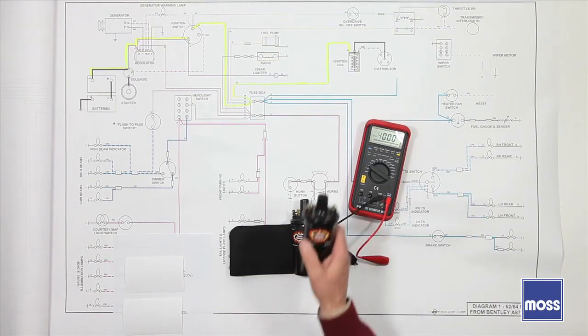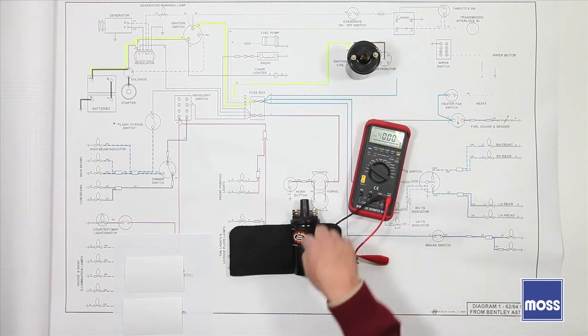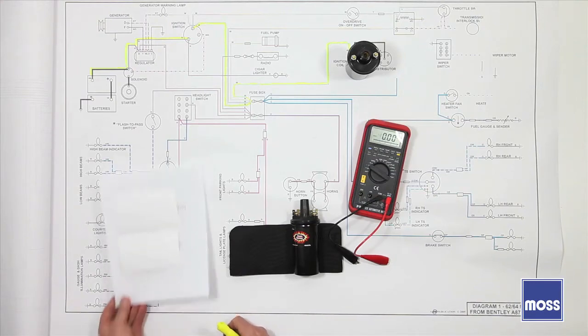So what's going to happen is I'm going to put a 1.5 ohm coil into this car instead of a 3 ohm coil. What will that do? Well, let's do the math again.